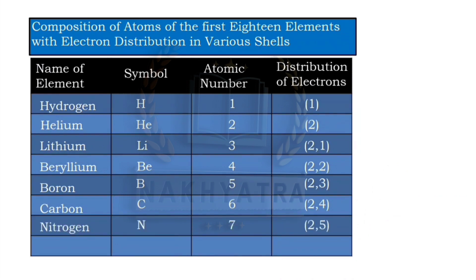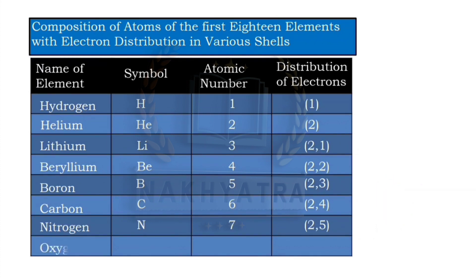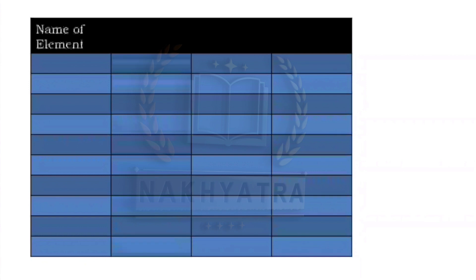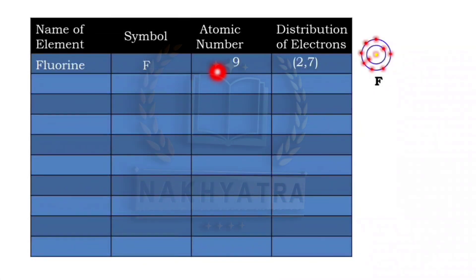Nitrogen has atomic number 7 with electron distribution 2,5. Oxygen has atomic number 8 with distribution 2,6 — two electrons in the first cell and six in the second cell. Fluorine has atomic number 9 with distribution 2,7 — two electrons in the first cell and seven in the second cell.